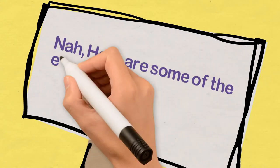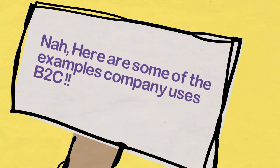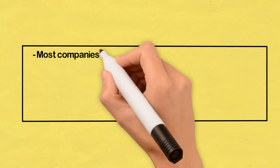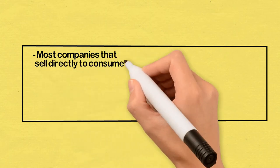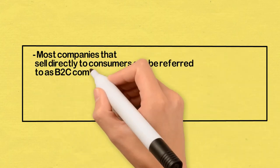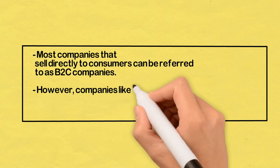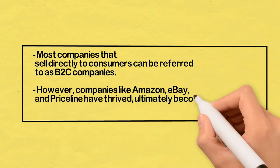Now, here are some examples of companies that use B2C. To be specific, there are companies like Amazon, eBay, and Priceline who are using business to consumer concepts.